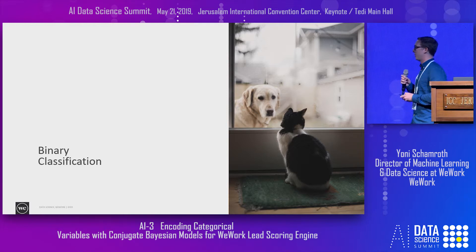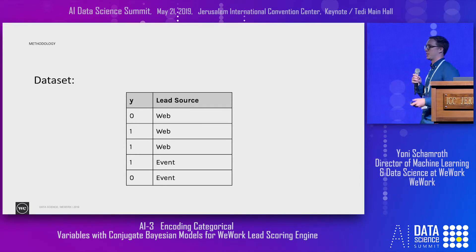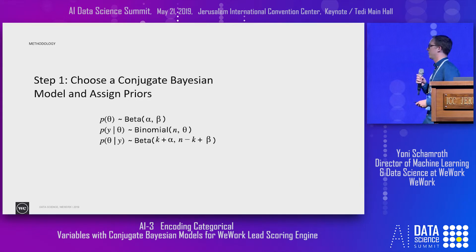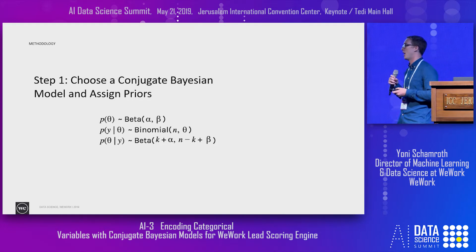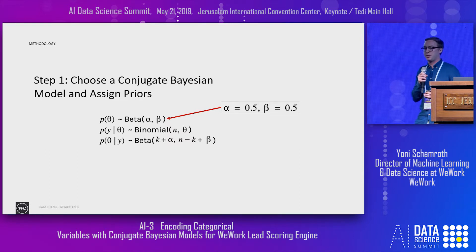Let's walk through a simple binary classification example. Here's a dataset where Y is our target variable — zero is failure, one is success — and we have one column, lead source, with two values: web and event. The first step is choosing a conjugate Bayesian model and assigning priors. Because it's binary classification, we use the beta-binomial: k successes plus prior alpha, and n minus k failures plus prior beta. We assign an uninformative Jeffreys prior to start: alpha equals 0.5 and beta equals 0.5.